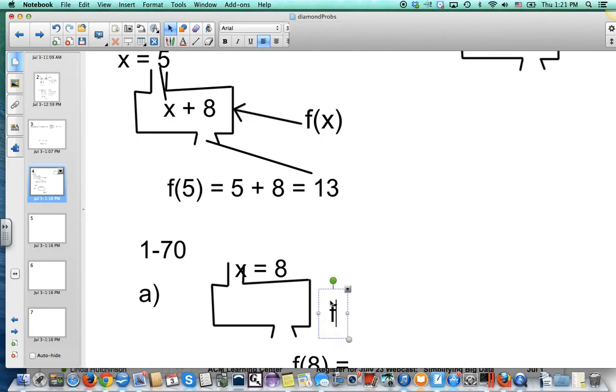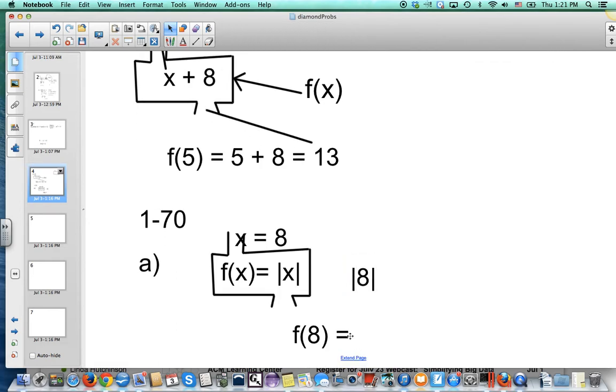The function's job is to take the absolute value of whatever number you put in. The number we're putting in is 8. So it's going to take the absolute value of 8, which is still 8. So f(8) would just be 8.